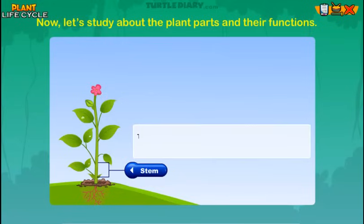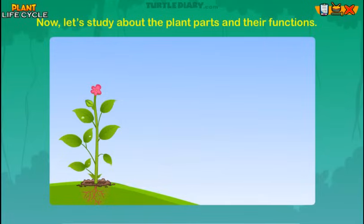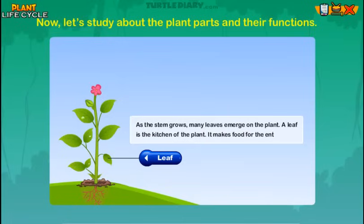The stem, too, grows out of the seed. The stem is the backbone of a plant — it provides support to the plant. As the stem grows, many leaves emerge on the plant. A leaf is the kitchen of the plant; it makes food for the entire plant.